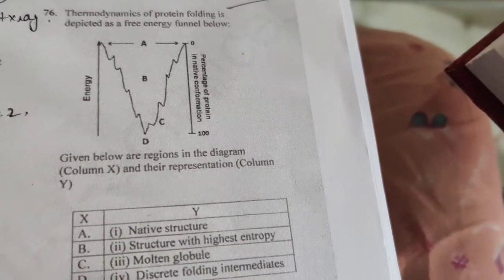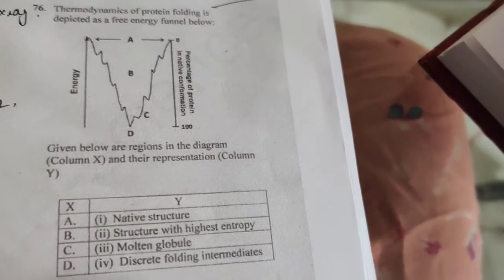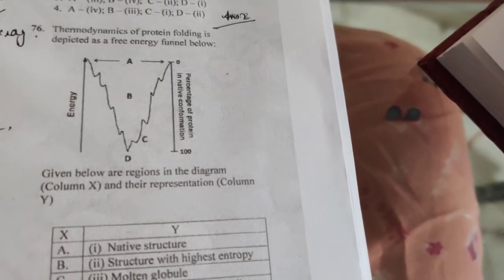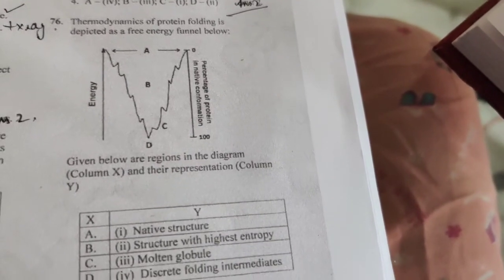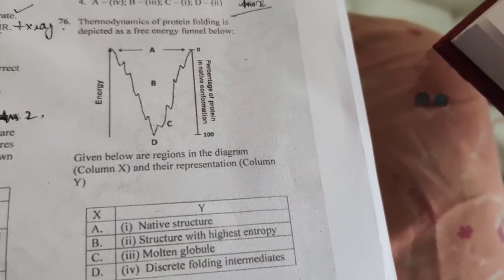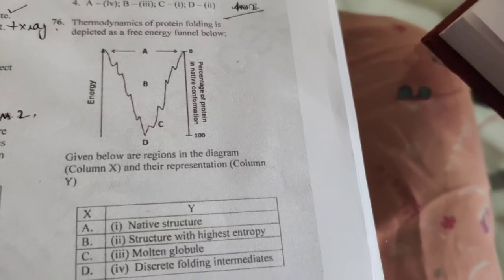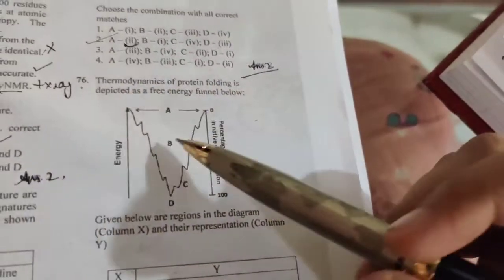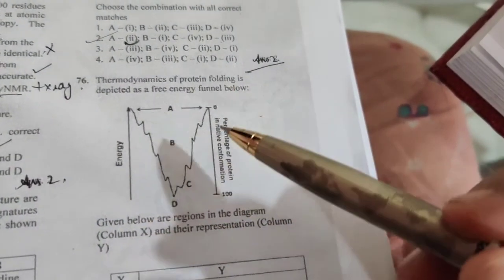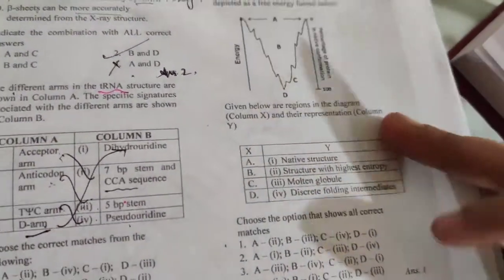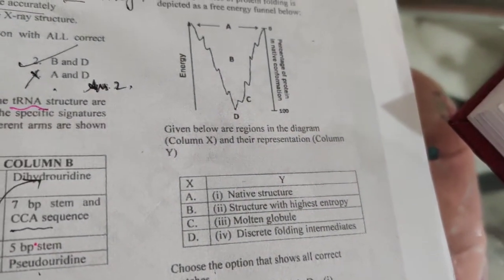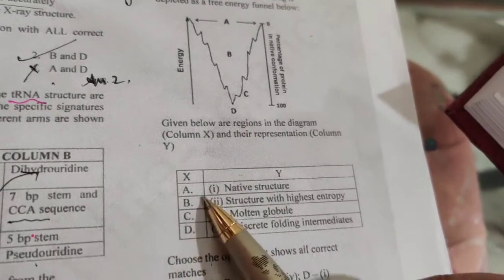Hi everyone, welcome back to the channel. We are discussing CSIR NET June 2019 paper, Part C, and we are on question number 76. It says thermodynamics of protein folding is depicted as a free energy funnel below. So this is a protein folding path curve with a free energy funnel. Given below are the regions in the diagram column X and their representatives. Here we have different confirmations here and here.